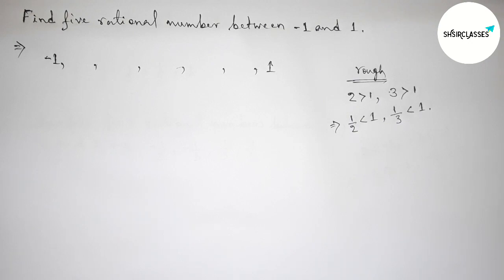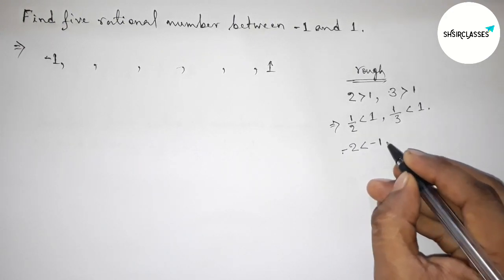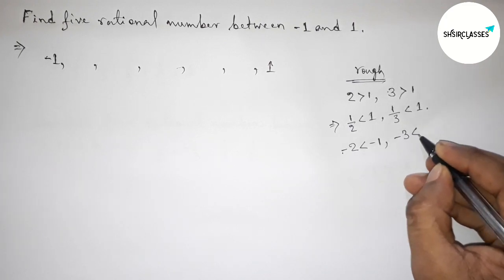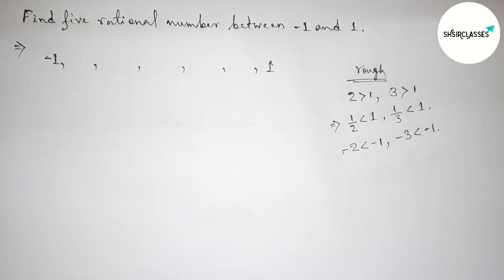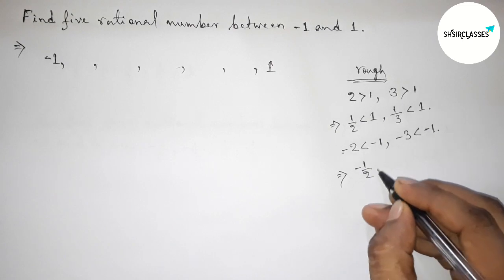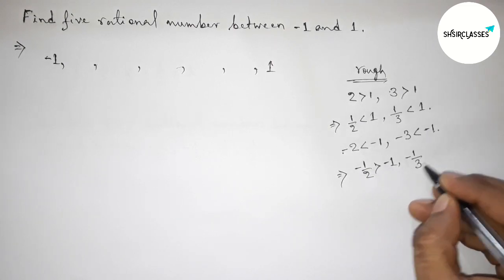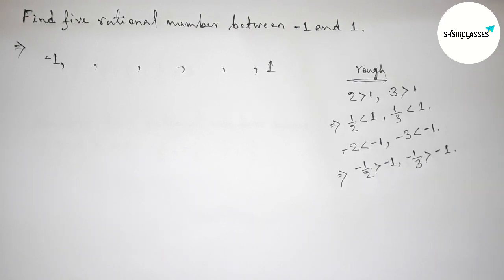Okay, similarly taking here for negative case. So minus two, this is less than minus one. Minus three less than minus one. So inverse of both numbers, that is inverse of minus two, this is minus one by two, always greater than minus one. And also minus one by three always greater than minus one.